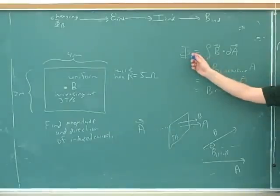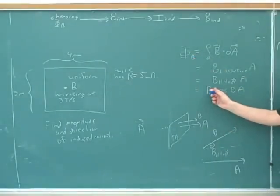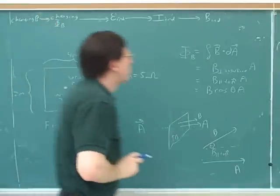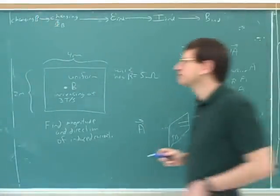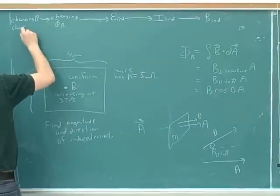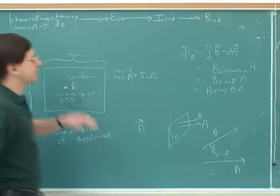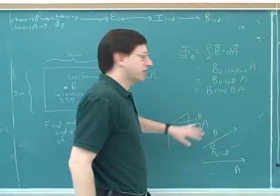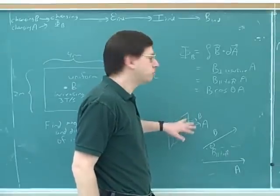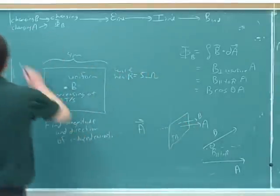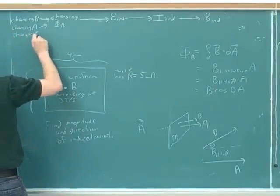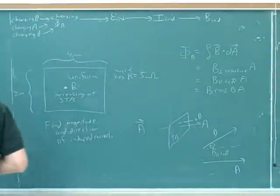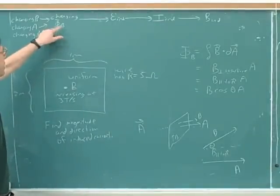So what can cause a change in the magnetic flux? If the magnetic field B changes, that would cause a change in the magnetic flux. Or if the area is changing, that would change the magnetic flux. Or if the angle between the loop and the magnetic field is changing — that is, if you're rotating the loop — then the angle theta between the magnetic field and the loop would change. Remember that we defined theta as the angle between the B vector and the A vector. Any of those can cause a change in the magnetic flux.